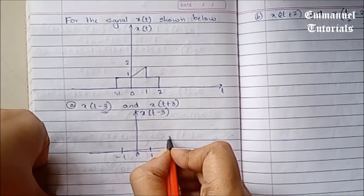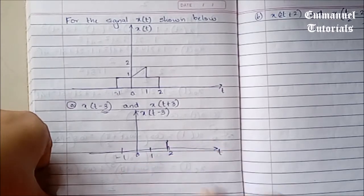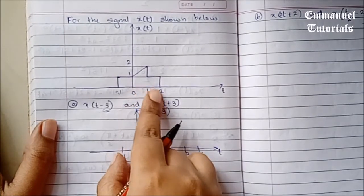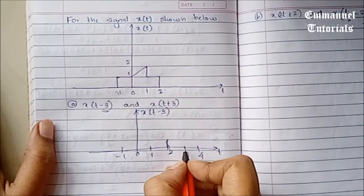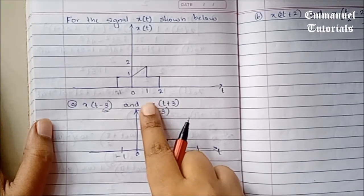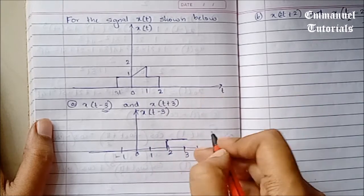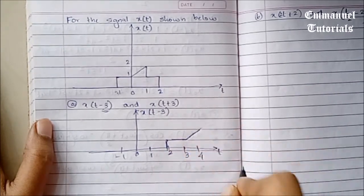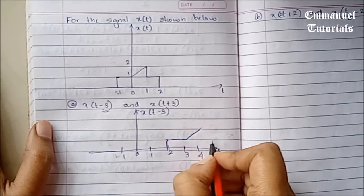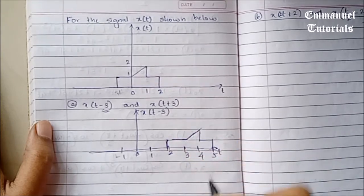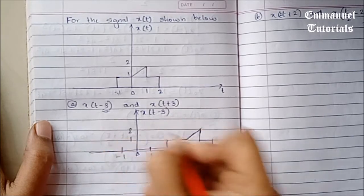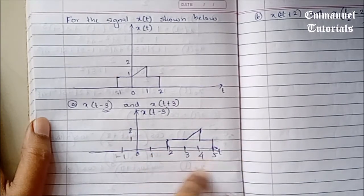So let's draw this. The point at 0 will appear at 0 plus 3, so it will be appearing at 3. The point at 1 will appear at 1 plus 3, which is 4. The point at 2 will appear at 2 plus 3, which is 5. It's very simple. Hope you understood this. You can also label the numbers on the axis — the amplitude and time axis.